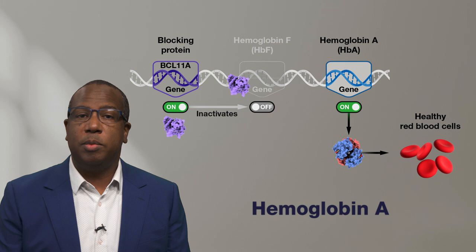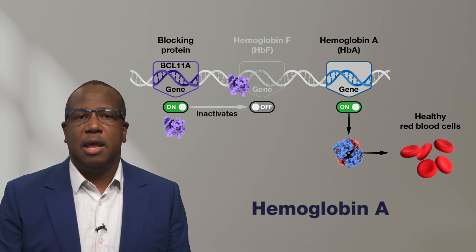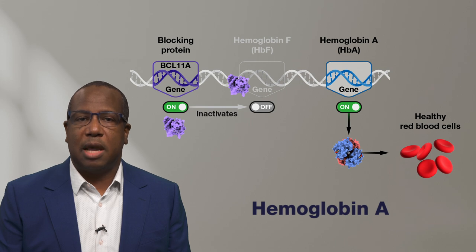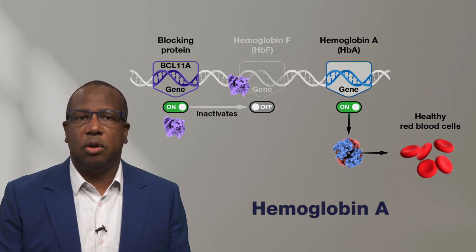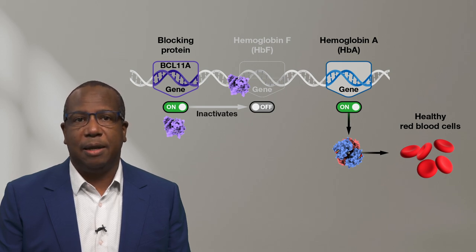Hemoglobin A is also a non-sickling hemoglobin that is present in red blood cells after birth. Hemoglobin A is also known as adult hemoglobin or HBA.